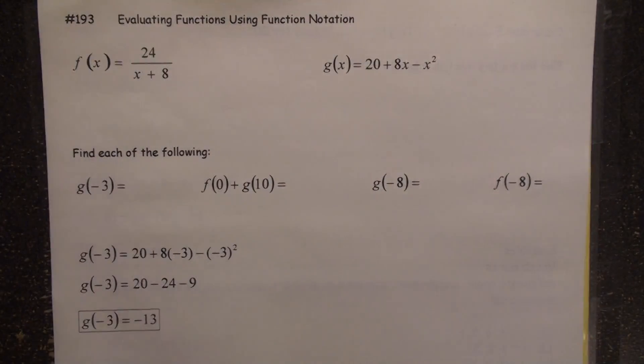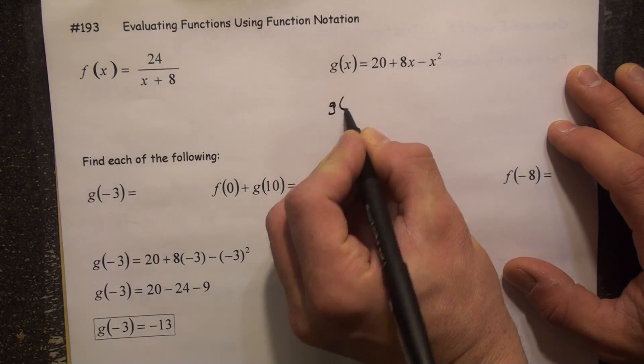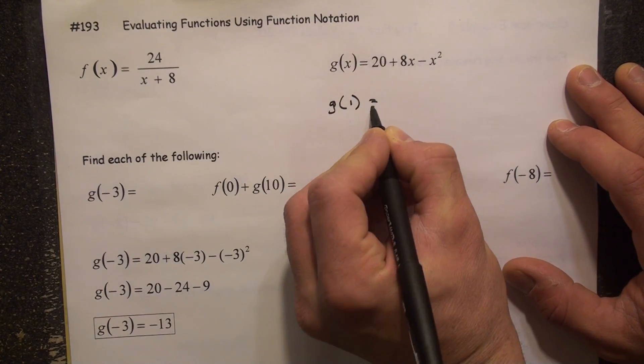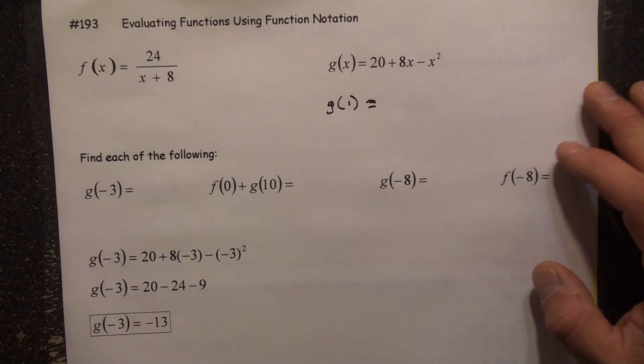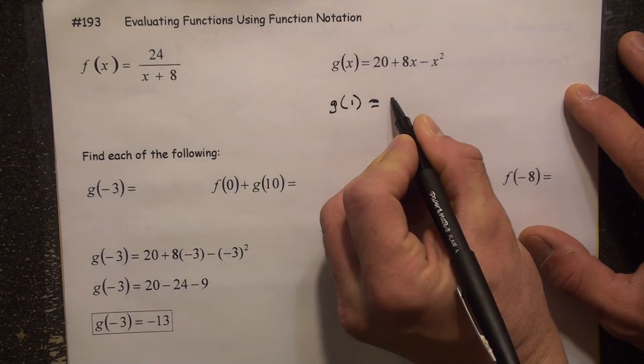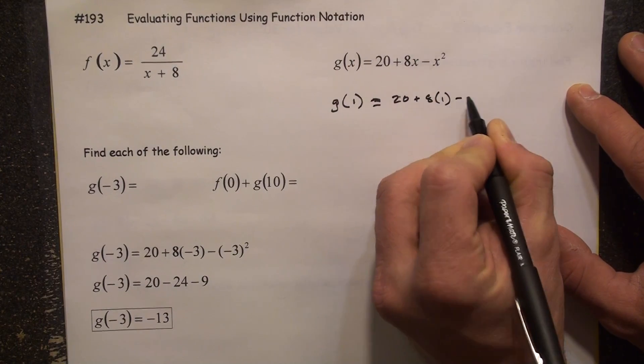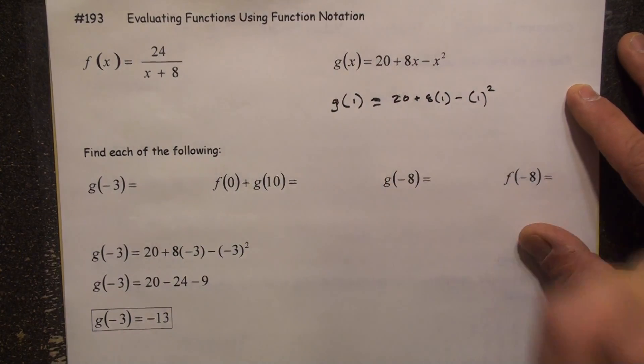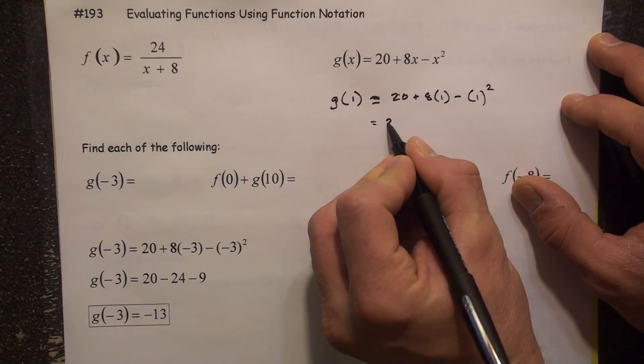We're going to take a look at these four function values. Now actually, before we do these four that I have typed up, let's just do one that's real simple. Let's do g of 1. G of 1 is how this is pronounced. What we're going to do is plug a 1 in for x. You're going to have 20 plus 8 times 1 minus 1 squared. Therefore, 28 minus 1, which is definitely 27.